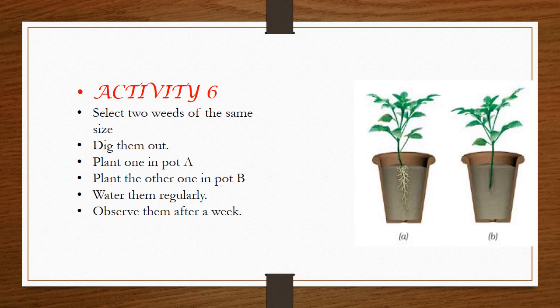In Activity 6, you have to select two weeds of the same size and dig them out of the soil. Plant one in Pot A and the other in Pot B, then water them regularly and observe after every week. Weeds are unwanted plants. In Pot A, grow the plant with its root, and in Pot B, grow the plant without the root.